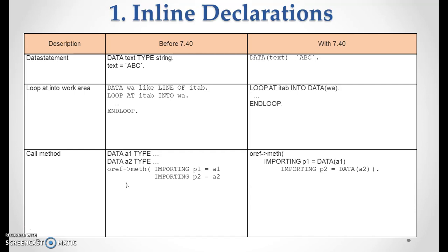Then we have the call method. Previously we declared data A1 type and data A2 type, then used them with the object: OREF pointing to method, importing P1 equals A1, P2 equals A2. In 7.40 inline declaration, we write directly: OREF pointing to method, importing P1 equals data(A1) and P2 equals data(A2) — declaring A1 and A2 right there within the importing statement.